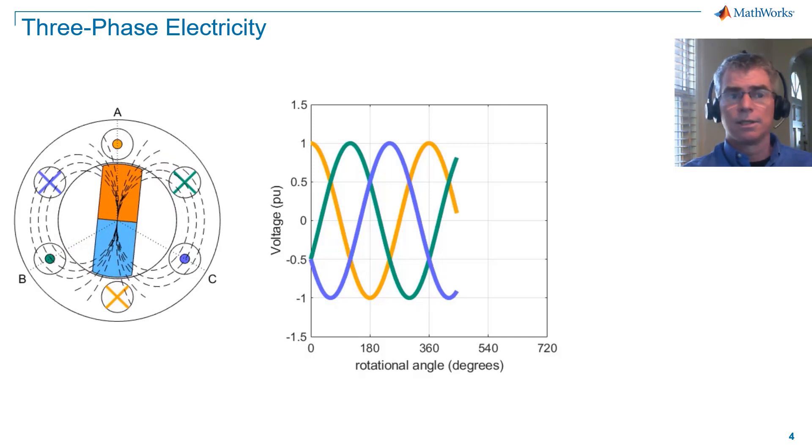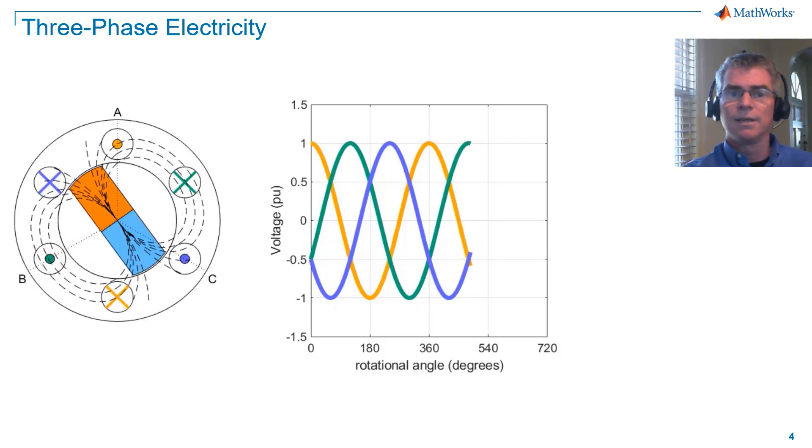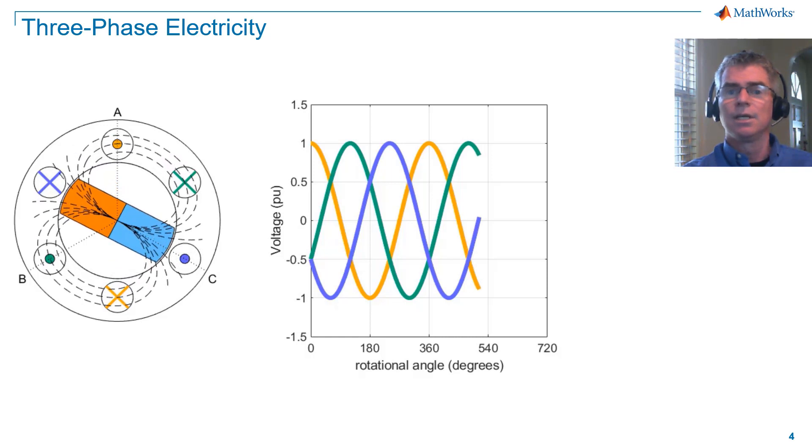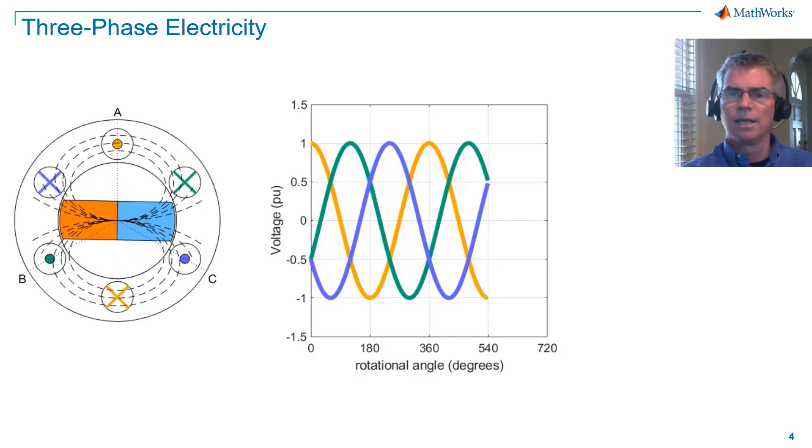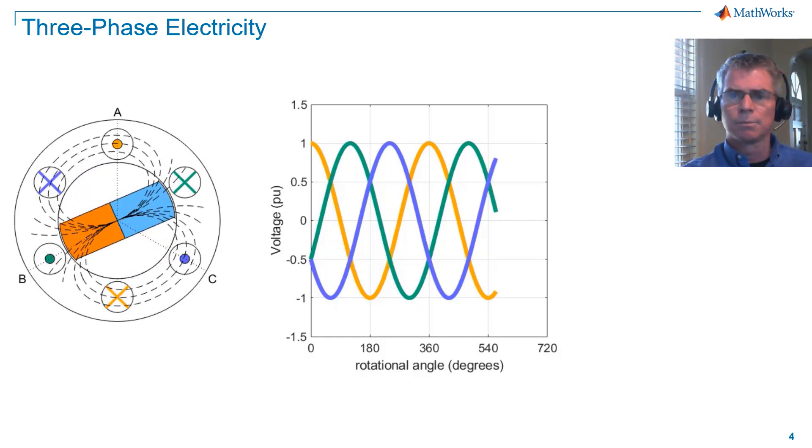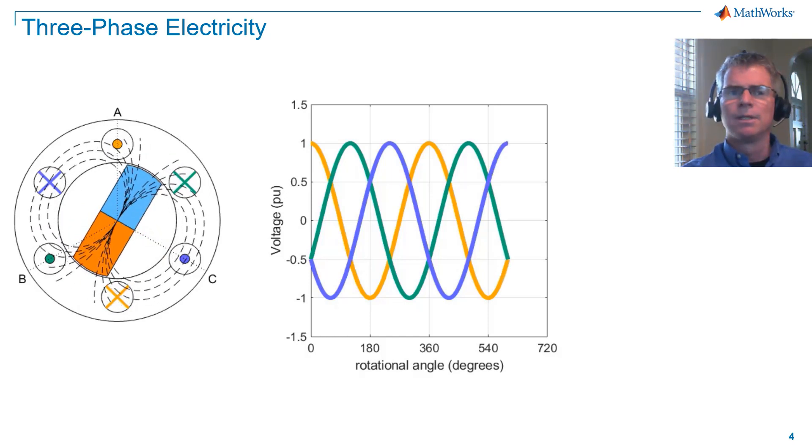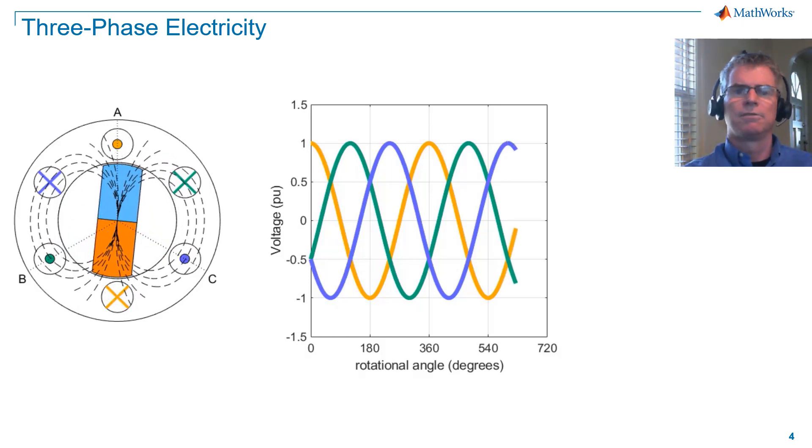As a circle is 360 degrees, we can also say that the voltage on coil C leads the voltage on coil A by 120 degrees. Let's look at the voltages in vector form to gain more clarity on this observation.